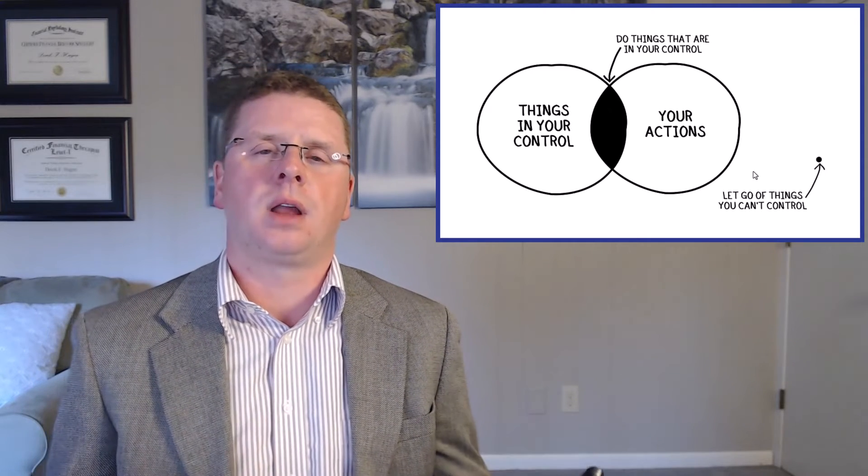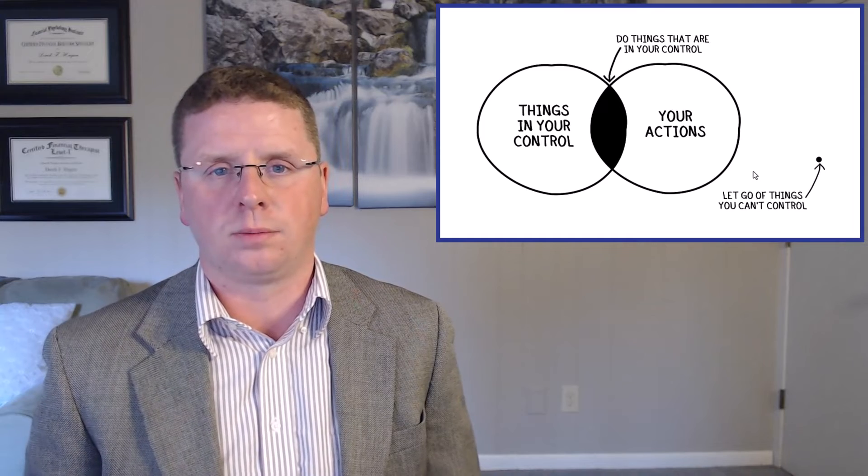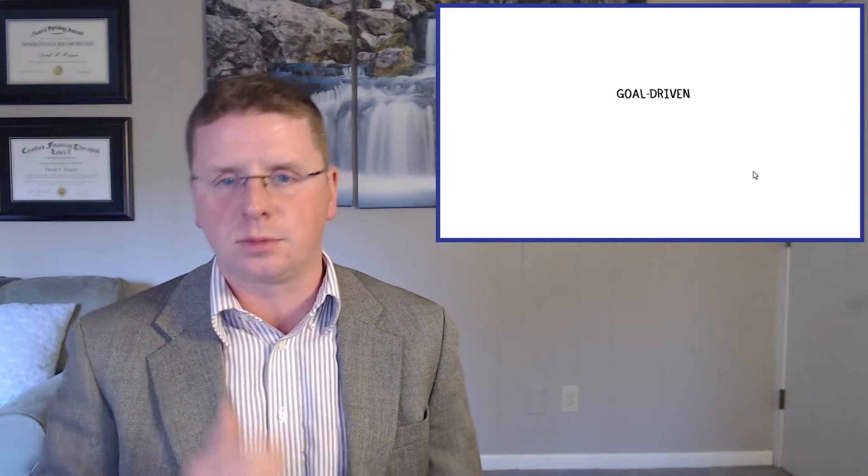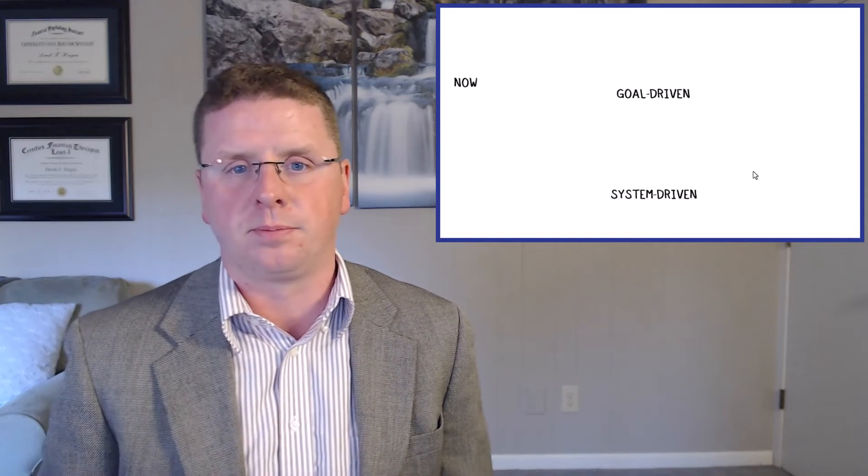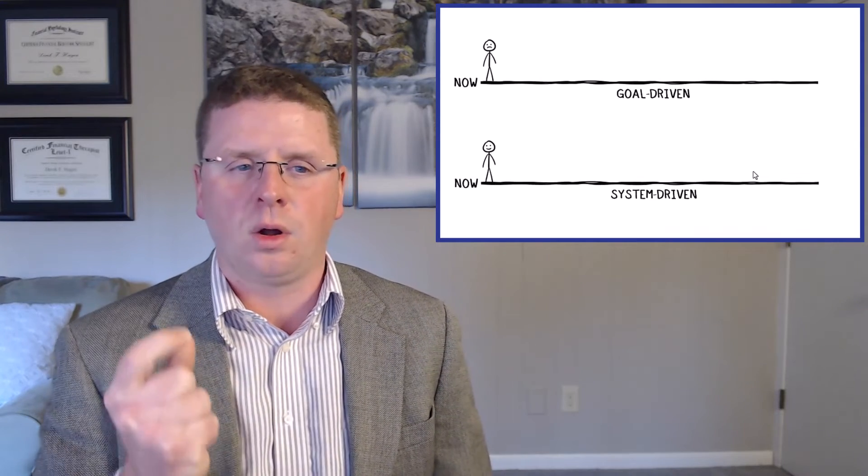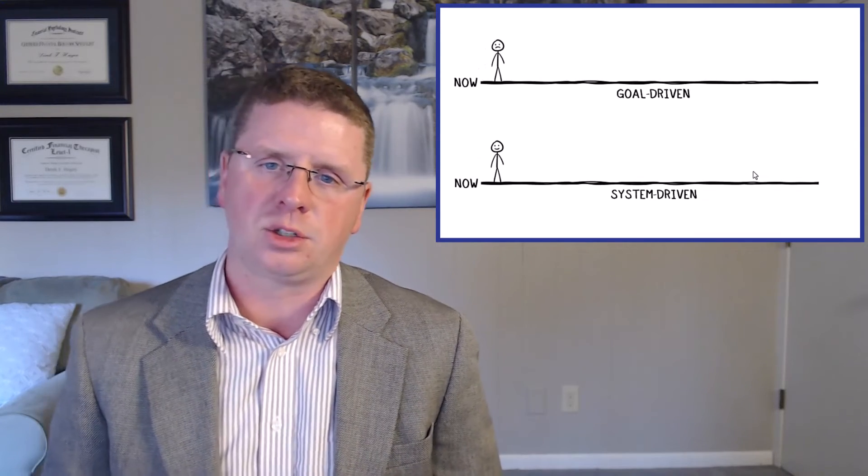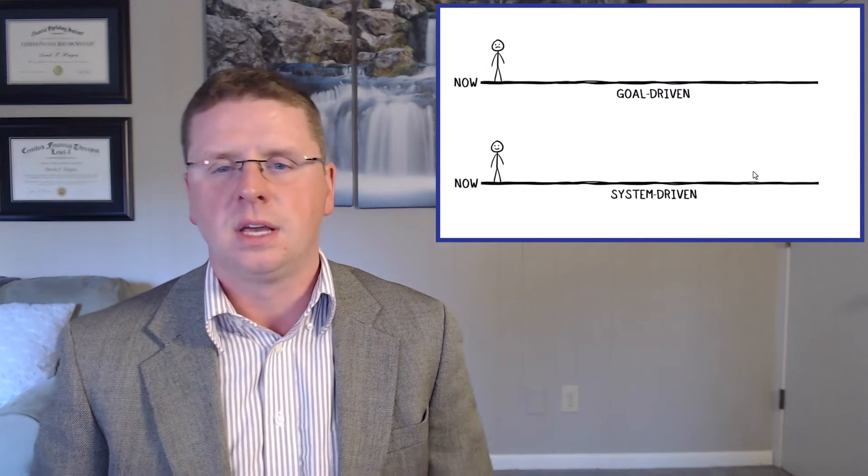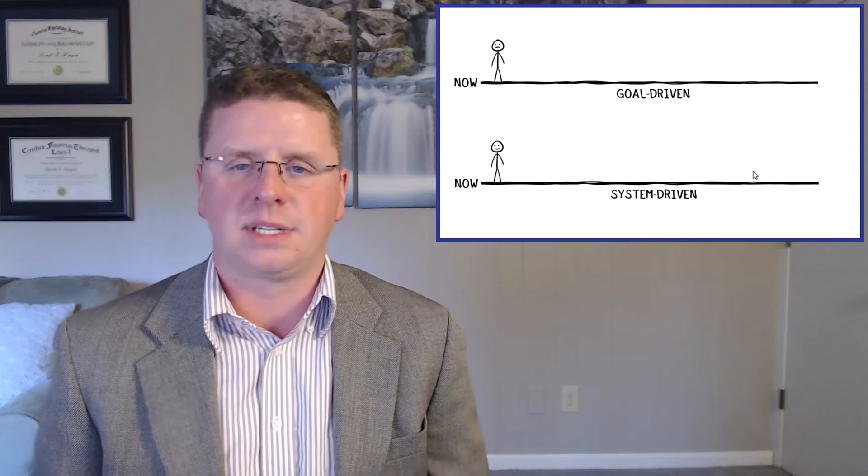Now remember, we talked about outcomes are outside of our control. What does that mean? Let's look at outcome-focused people, which is goal-driven people. A goal-driven person is driven by a goal. A system-driven person is driven by a system.